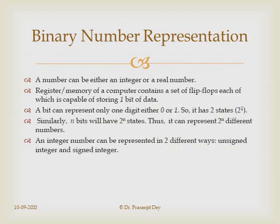Binary number representation is useful in computers because in computer memory, a flip-flop is capable of storing one bit of information and has two states: 0 and 1. With n flip-flops, we can store n bits, giving 2ⁿ possible states. So with n bits we can represent 2ⁿ distinct numbers. We can represent any integer number in two ways: unsigned representation and signed representation.